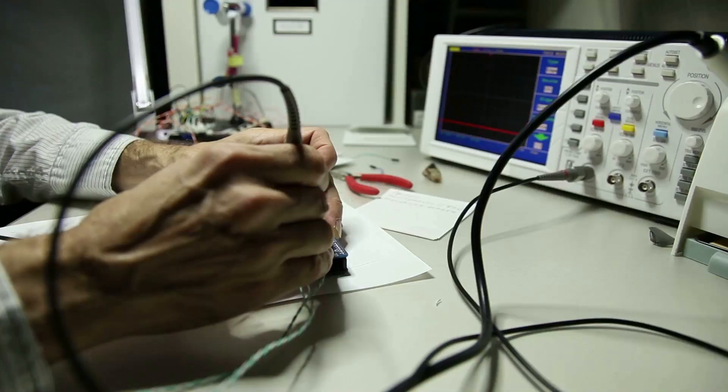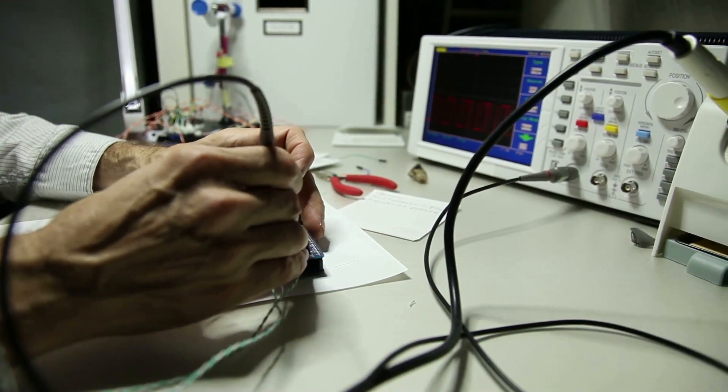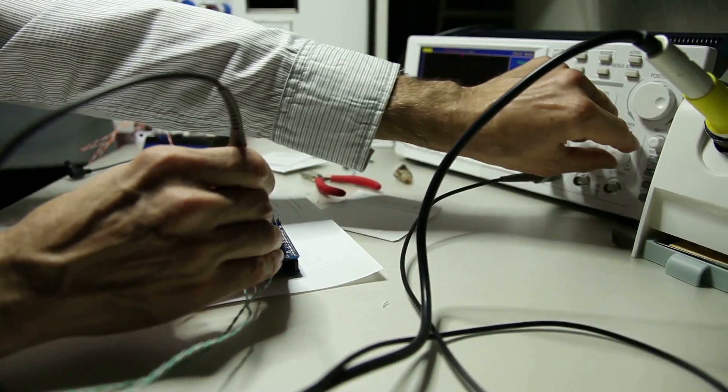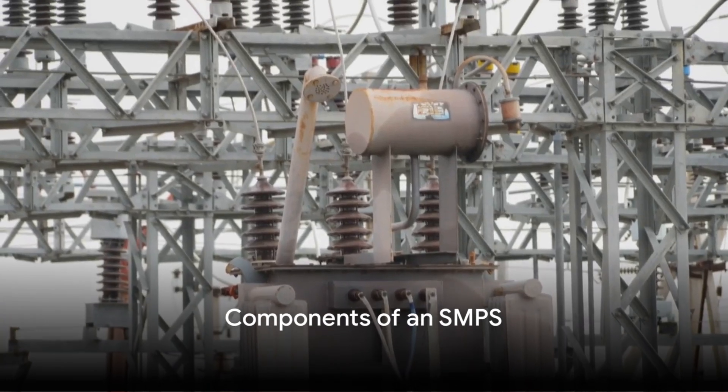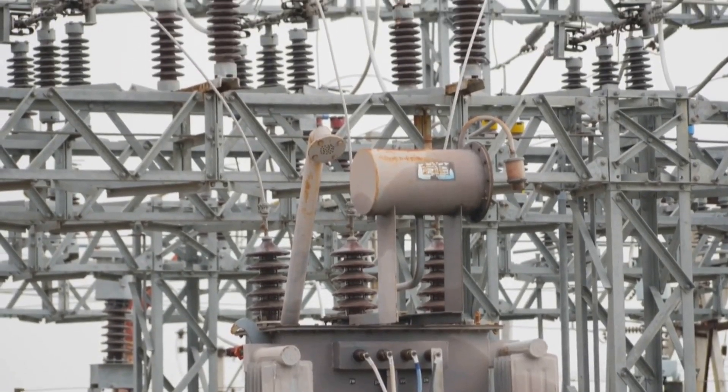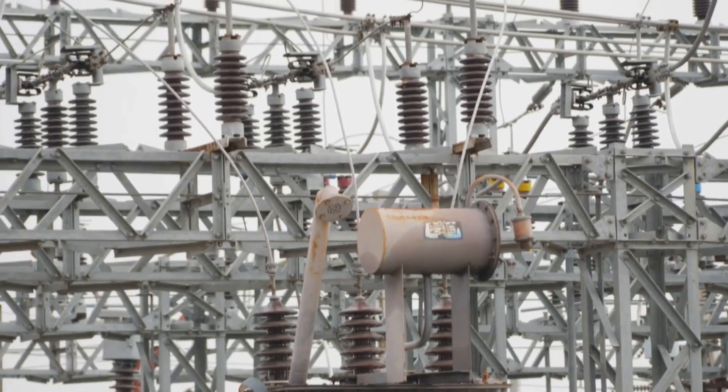This is a crucial component that ensures your electronic devices get the right amount of power they need to perform their functions. At the heart of an SMPS are four main components: an input rectifier, a power switch, a transformer, and an output rectifier.